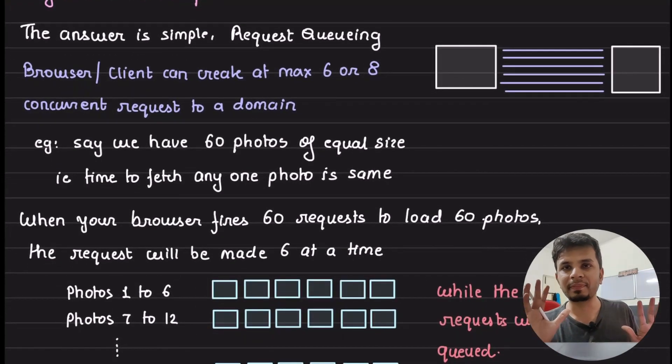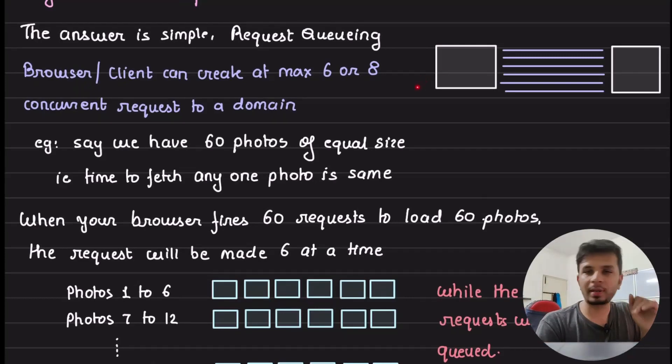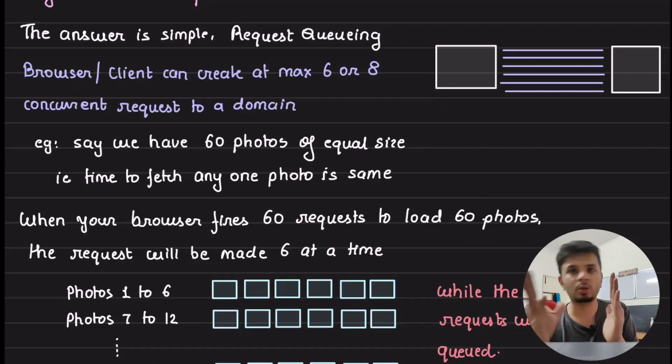The answer is pretty simple. The answer is request queuing. Typically what happens is that any browser or client that you are using has a limit on how many maximum concurrent TCP connection that it can create to a particular domain. This is what browser imposes so that people don't abuse their system. The idea here is, or the constraint here is, if you are a client, if you are a mobile app or a browser, at max, the concurrent request that you can make is 6.